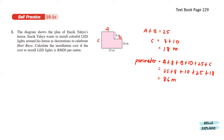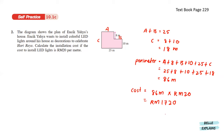Now that we already know the perimeter, we can calculate the cost. If 1 meter equals to RM20, we take 86 meters and multiply it with RM20. That gives us the total of RM1,720 altogether.